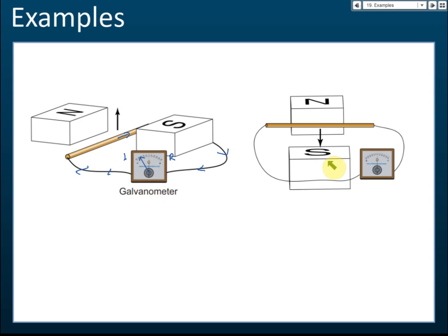For this example, the current goes in and then comes out, so the galvanometer deflects to the left. And for the next one, the galvanometer deflects to the right. That's how we determine the direction of the current.